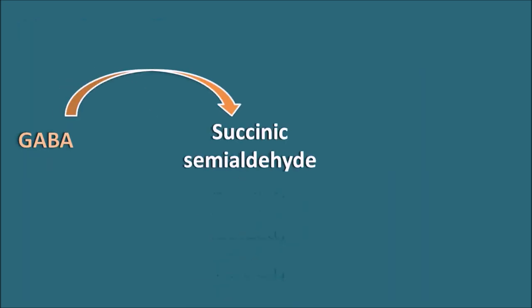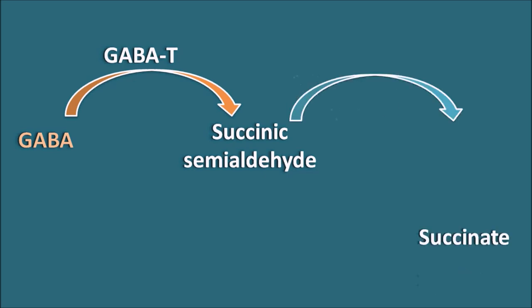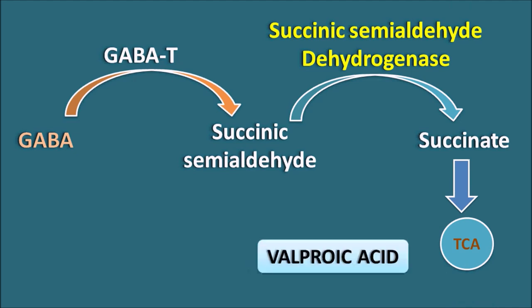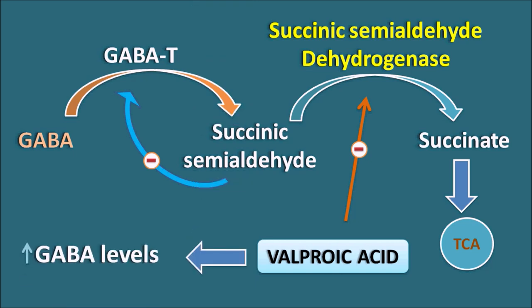GABA is converted into succinic semi-aldehyde by the enzyme GABA transaminase, and succinic semi-aldehyde is then converted into succinate by succinic semi-aldehyde dehydrogenase, which enters the TCA cycle. Valproic acid blocks the succinic semi-aldehyde dehydrogenase enzyme, resulting in increased levels of succinic semi-aldehyde. This in turn inhibits GABA transaminase by negative feedback, thereby indirectly increasing GABA levels and producing an inhibitory effect in the CNS.